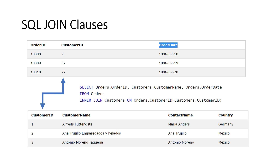For example, we select the order ID from orders, the customer name from customers, and the order date from the orders table. The INNER JOIN keyword is used and we join on the customers table on the basis of both customer IDs. If both customer IDs match, then it returns the data; otherwise null is returned.